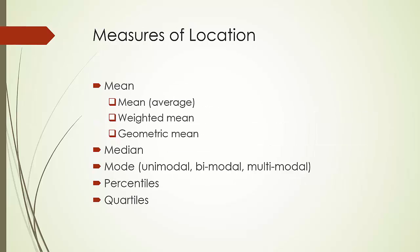Now we will take a look at measures of location. Mean, or average value, is computed by summing the data values and dividing by the number of observations. Mean provides a measure of the central location for the data. There are a few other means — here we introduce weighted mean and geometric mean. Weighted mean is obtained by assigning each observation a weight that reflects its importance. Geometric mean is calculated by finding the nth root of the product of n values.